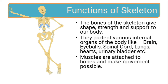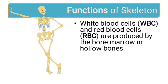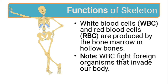Muscles are attached to the bones and make movement possible. White blood cells and red blood cells, which are the important ingredients of blood, are produced by the bone marrow. White blood cells fight the foreign organisms that invade our body — all the microorganisms like bacteria or viruses that enter our body. The WBCs act like an army for our body and fight against them.